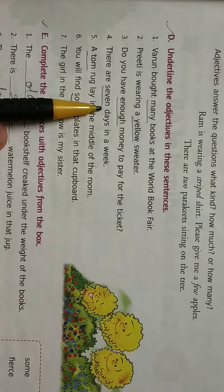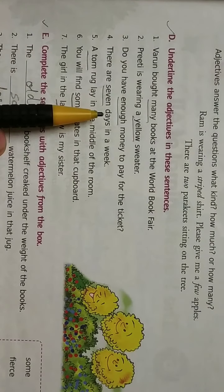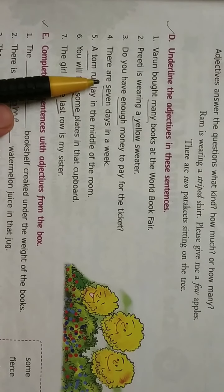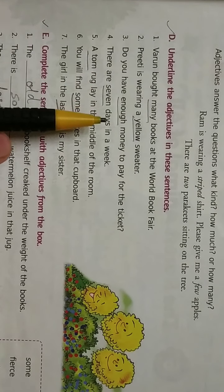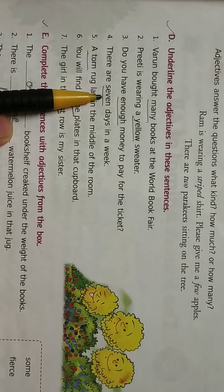There are seven days in a week. Where is the noun? Days. How many days? Seven. So what is told about days? There are seven days. So seven is your adjective.